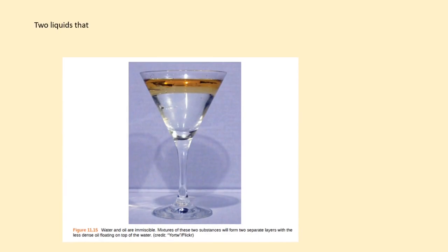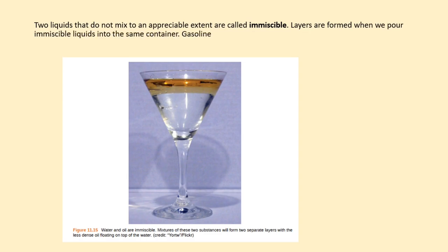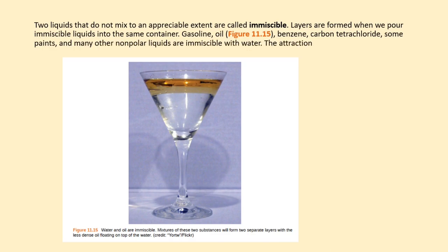Two liquids that do not mix to an appreciable extent are called immiscible. Layers are formed when we pour immiscible liquids into the same container. Gasoline, oil (Figure 11.15), benzene, carbon tetrachloride, some paints, and many other non-polar liquids are immiscible with water. The attraction between the molecules of such non-polar liquids and polar water molecules is ineffectively weak.